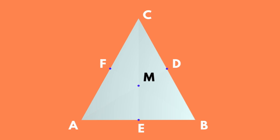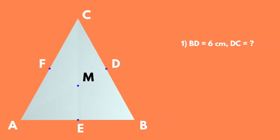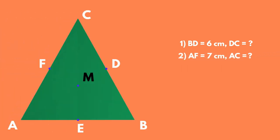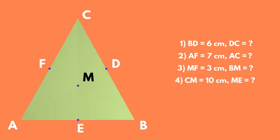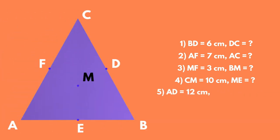Let's do an exercise based on our findings. If BD is 6 cm, then DC is? If AF is 7 cm, then AC is? If MF is 3 cm, then BM is? If CM is 10 cm, then ME is? If AD is 12 cm, then AM is? And MD is?